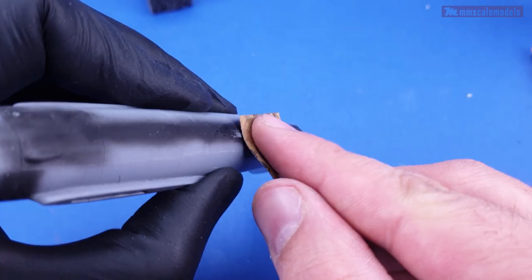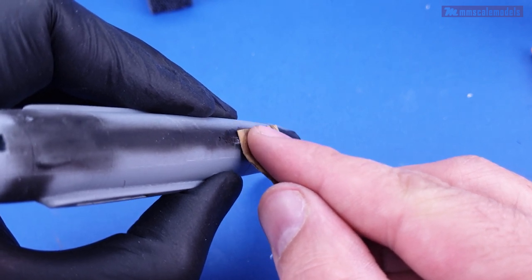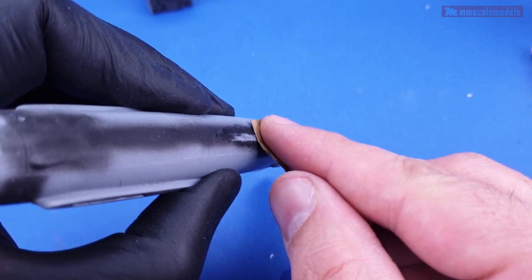The leftover black spots you can see are in fact the black CA glue I used as a filler in the previous episode.